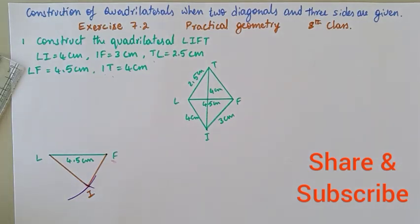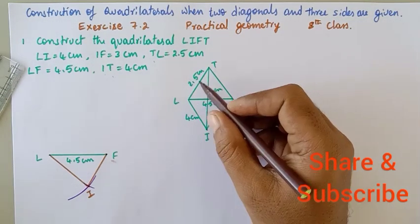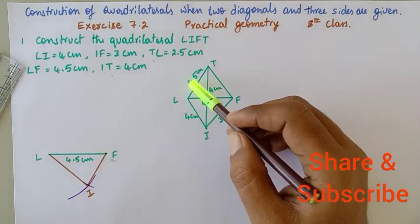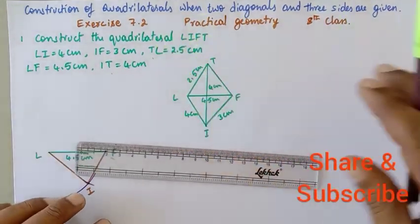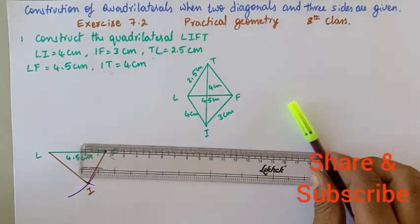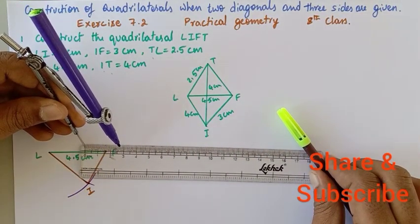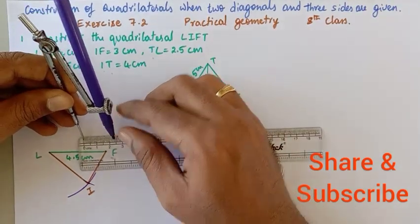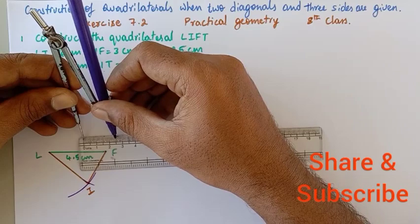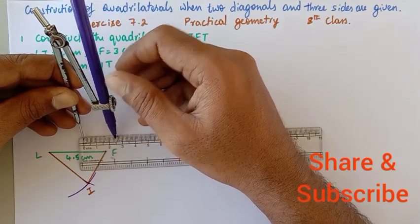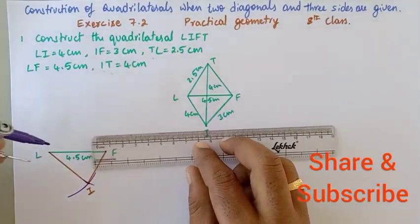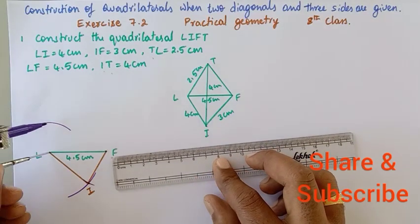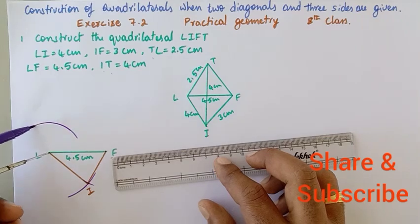Now it is time for us to mark LT. LT is about 2.5 cm, so let me take my compass and adjust this length to 2.5 cm. It is exactly 2.5 cm — and LT is 2.5 cm.